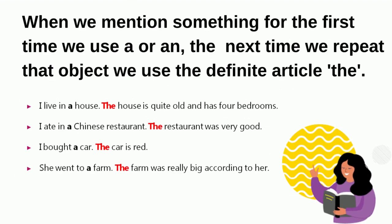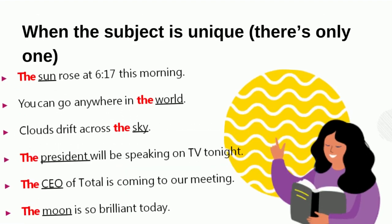When we mention something for the first time, we use 'A' or 'An' with it. But when we repeat it the next time, we use 'The'. For example: 'I bought a car. The car is red.' In the first sentence we used 'A' because 'car' gives a consonant sound. The second time 'car' is mentioned, we use 'The'.